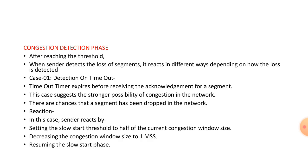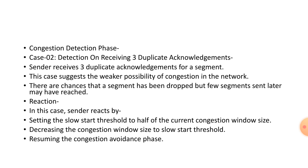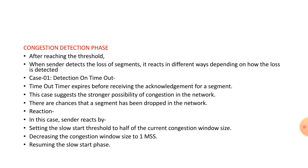In the congestion detection phase, there are two cases. Case 1 is detection on timeout, and Case 2 is detection on receiving three duplicate acknowledgements. In Case 1, the timeout timer expires before receiving the acknowledgement for a segment, meaning the sender does not receive the acknowledgement in time. This causes a strong possibility of congestion in the network. The sender reacts by setting the slow start threshold to half the current congestion window size, decreasing the congestion window size to 1, and resuming the slow start phase.